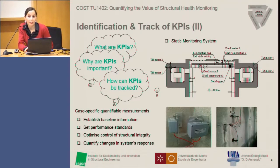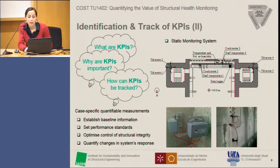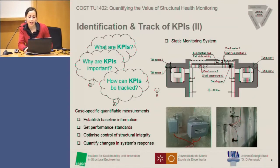How can we track them? It depends on the key performance indicators we select. In our case, since we are dealing with crack width and tower tilting, we used a static monitoring system consisting of four tiltmeters — two per each tower, one in each direction — two crack meters (one for the crack on the outer side of the facade, another for the inner side), two surface temperature sensors, and one combined sensor for temperature and relative air humidity.